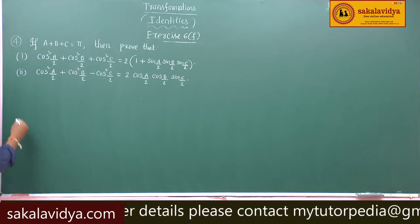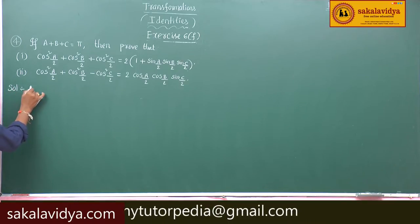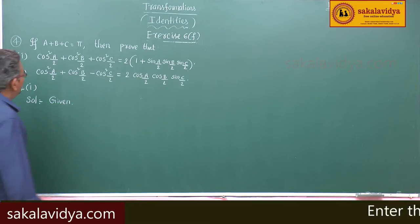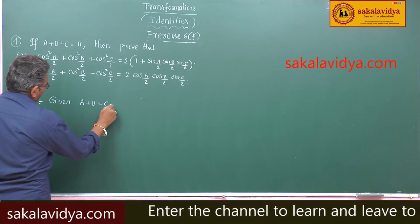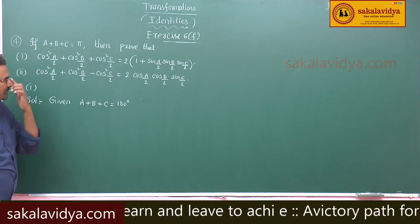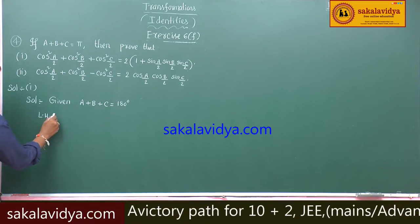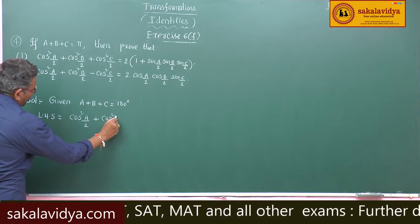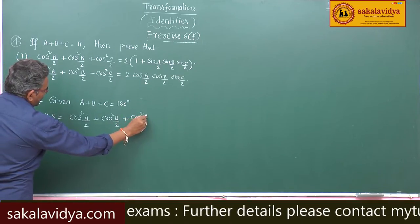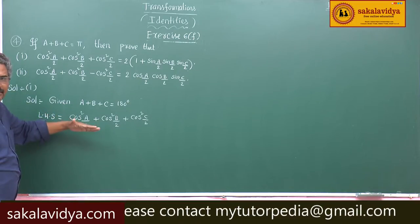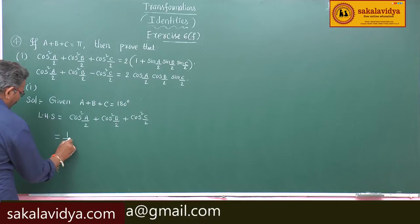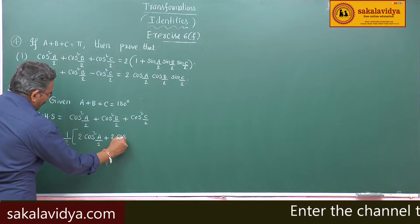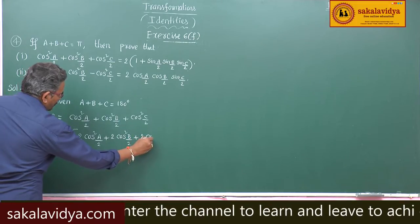Let us solve the first one. Given a plus b plus c is equal to pi, means 180 degrees. Left hand side: cos squared a by 2 plus cos squared b by 2 plus cos squared c by 2. Multiply and divide by 2, giving half multiplied by 2 cos squared a by 2 plus 2 cos squared b by 2 plus 2 cos squared c by 2.